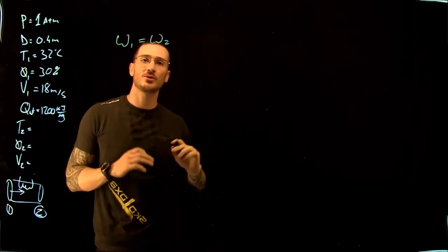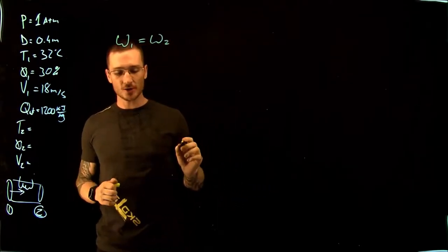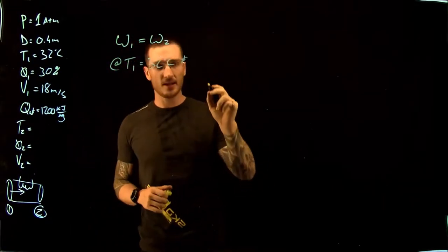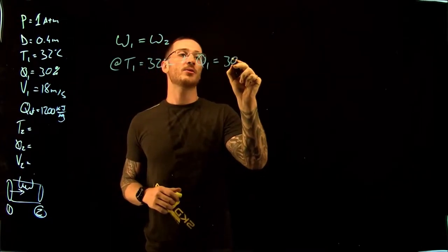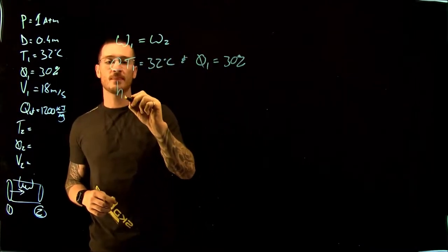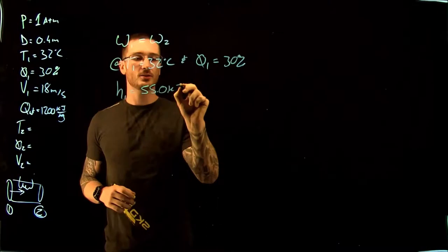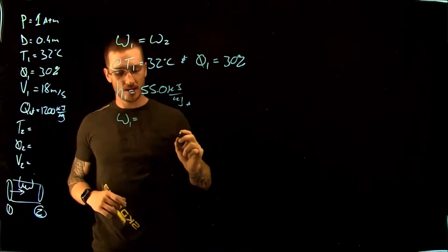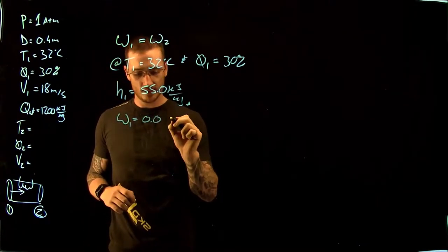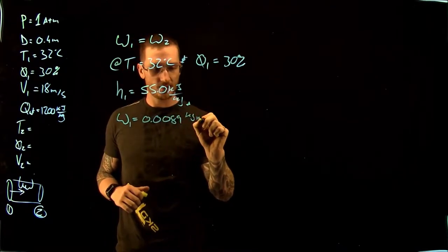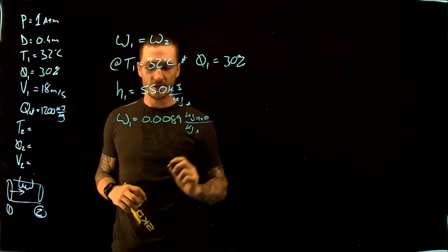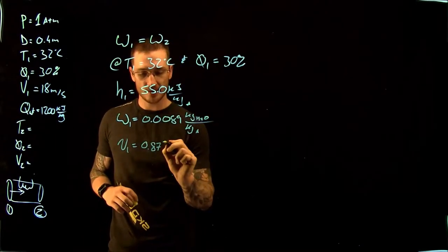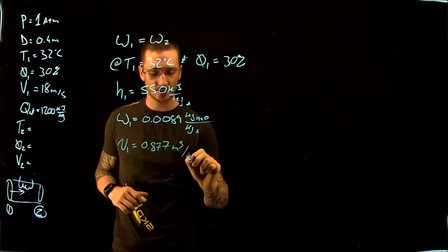So the specific humidity at point 1 equals the specific humidity at point 2. From the psychrometric charts, at a temperature T1 equal to 32°C and a relative humidity of 30%, we find an enthalpy of 55.0 kJ/kg of dry air, a specific humidity of 0.0089 kg H₂O per kg of air, and a specific volume of 0.877 m³/kg of air.